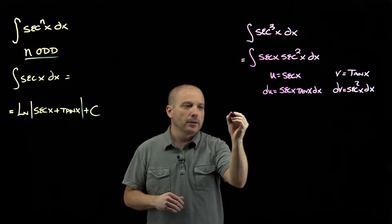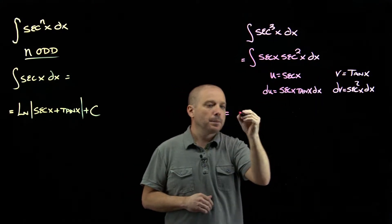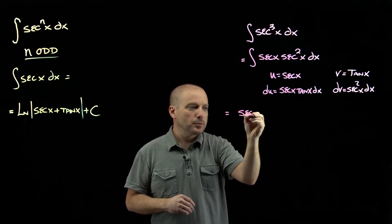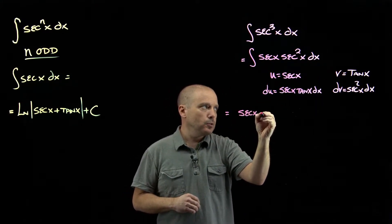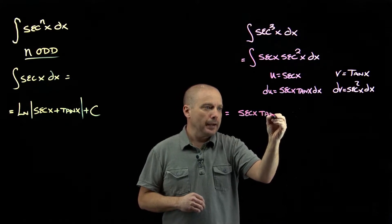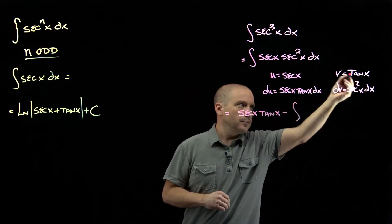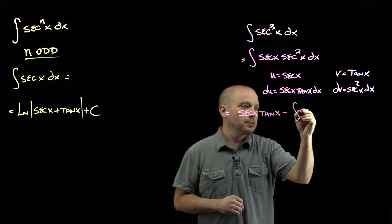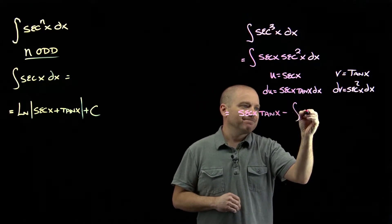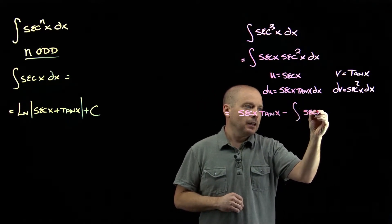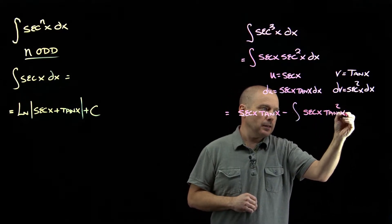Now this is equal to uv. Integration by parts says that the integral is u times v minus the integral of v du, so that's secant x tangent minus the integral of tangent squared x times secant x dx.